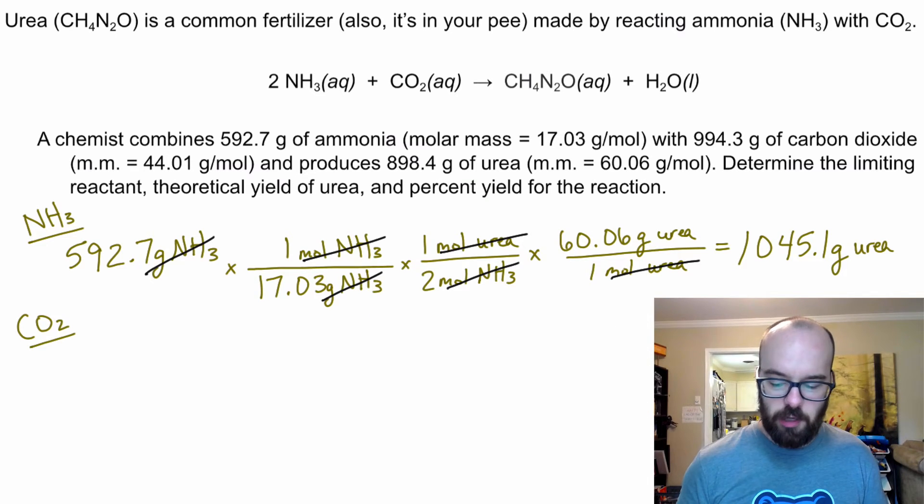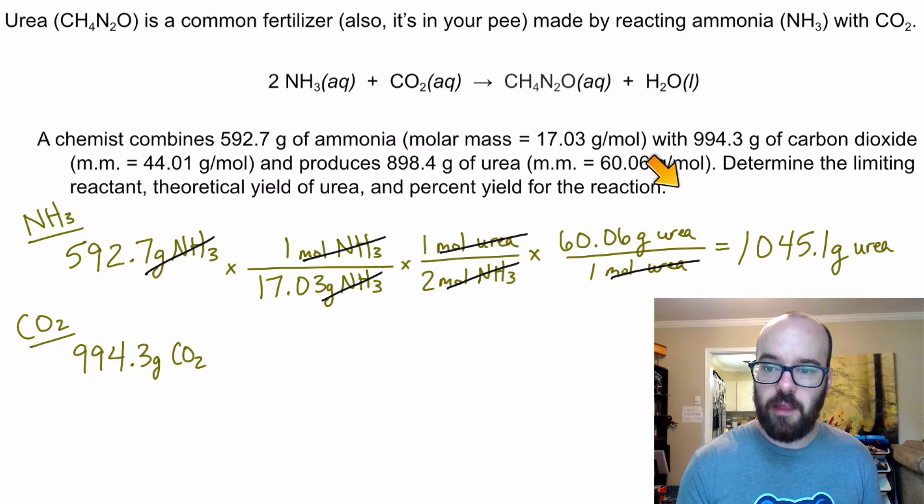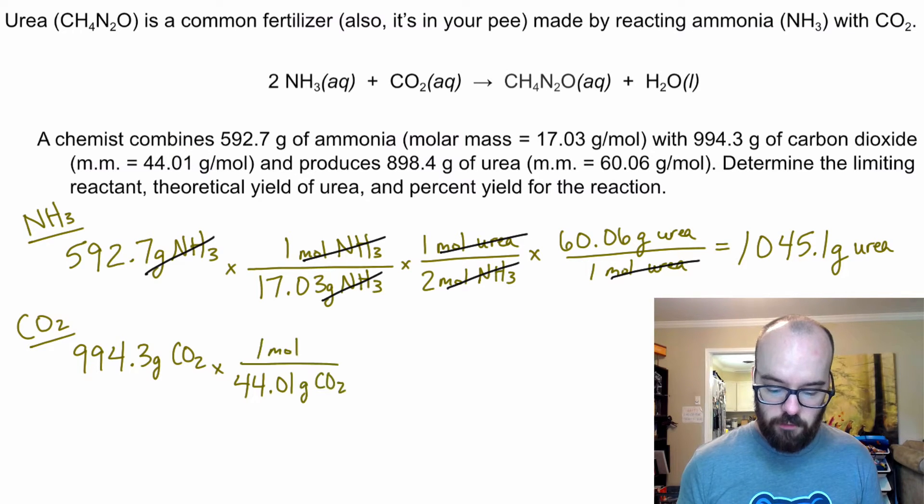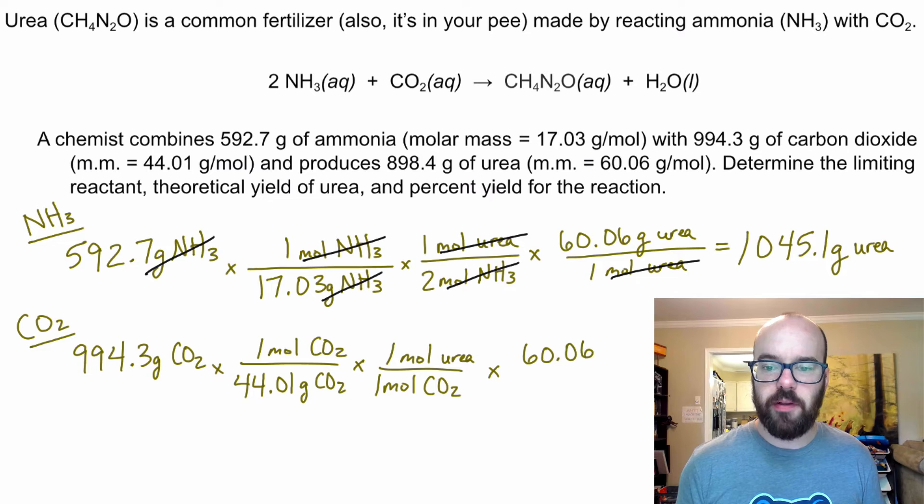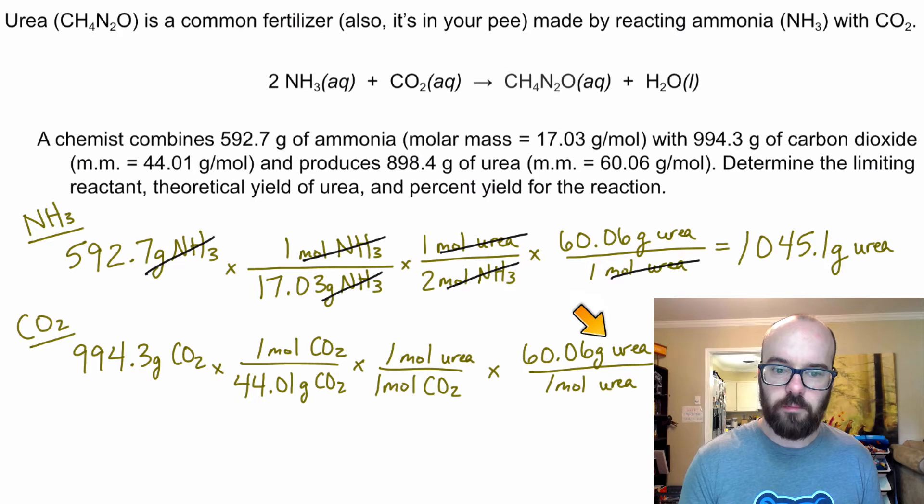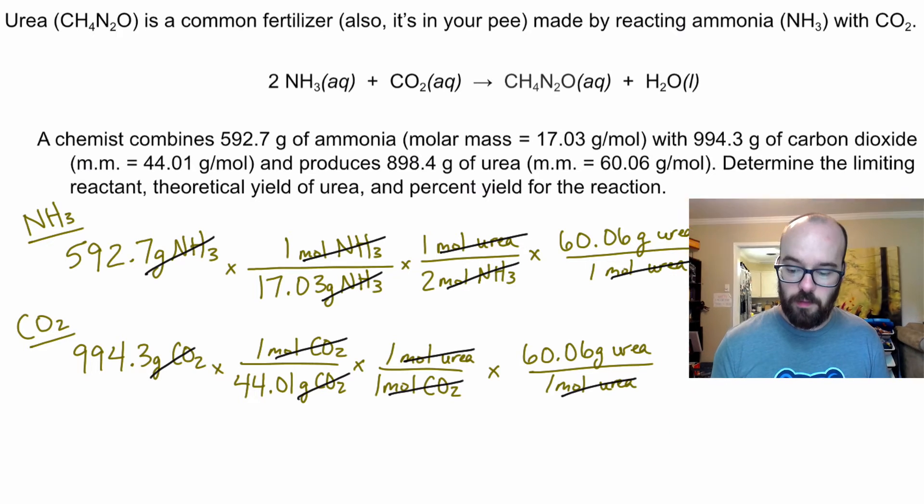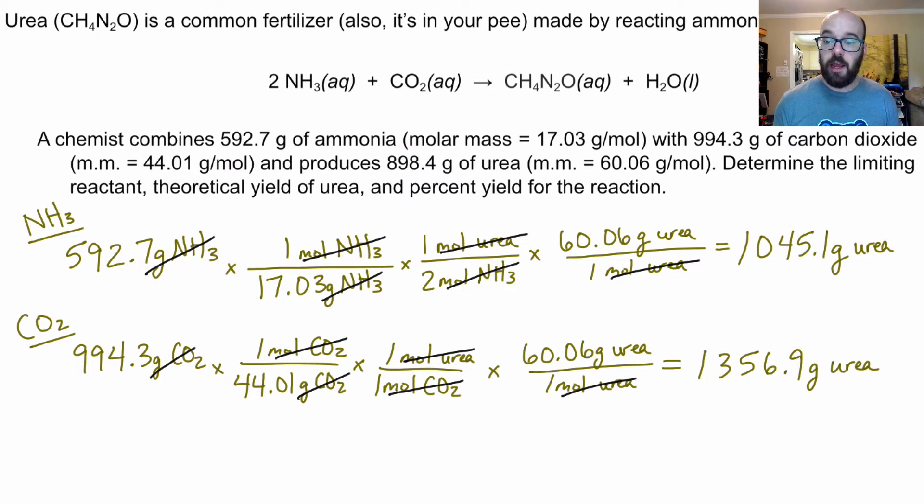So let's do the next one, carbon dioxide. 994.3 grams of carbon dioxide. We get that from the problem right here. I'll use its molar mass 44.01 to convert to moles of carbon dioxide. Grams are going to cancel out. I've got one mole of carbon dioxide for one mole of urea. And then I'll use 60.06 again to convert to grams of urea. And I've got 1,356.9 grams of urea.